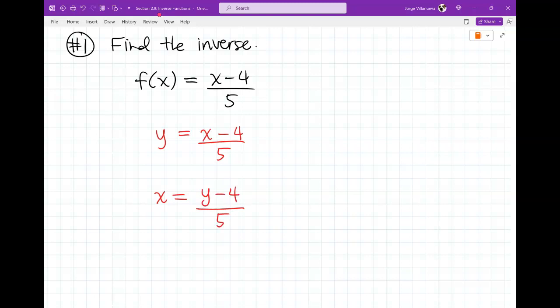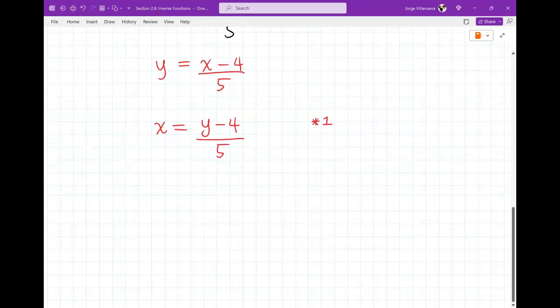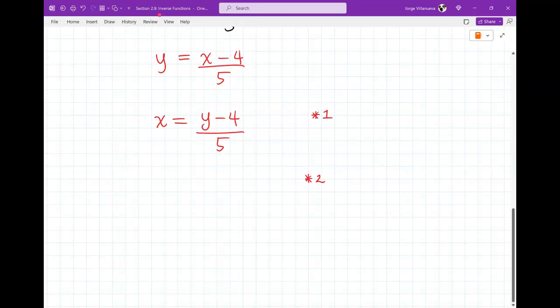Step number two, solve for y. So in order to solve for y, what do I have to move first? That five, right, dividing by five, so let's multiply both sides by five. In other words, we're going to take it over here, multiply it out, so that's going to be 5x equal to y minus 4. So far so good, and what do I do to finish off solving for y? I add 4, so let's do plus 4, plus 4, I get 5x plus 4 is equal to y.